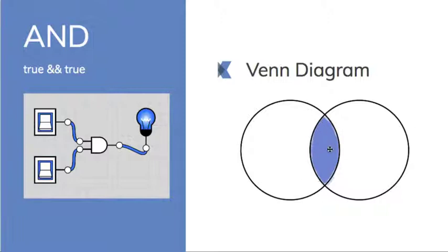Venn diagram is simple. It's only where the two overlap, because that's both this one and that one.